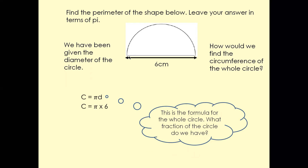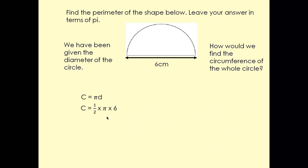Now here we have to find the circumference of half of the circle, or a semicircle. So we have to halve this value — divide by 2. The answer is going to be 3 pi centimeters. That is the circumference of a semicircle.